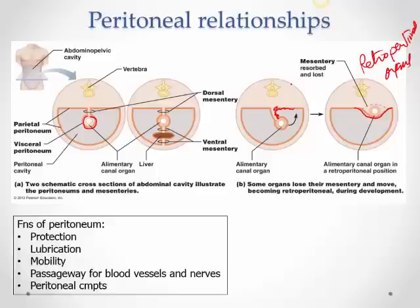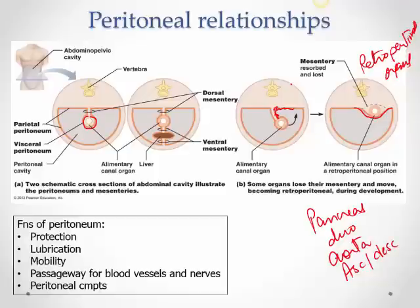Examples of retroperitoneal organs include the pancreas, the duodenum, the aorta, and the ascending and descending colon. In the lab, unless you remove all organs with the mesentery, you cannot observe these. The small intestine covers the pancreas and duodenum — only after removing the small intestine can you observe them.